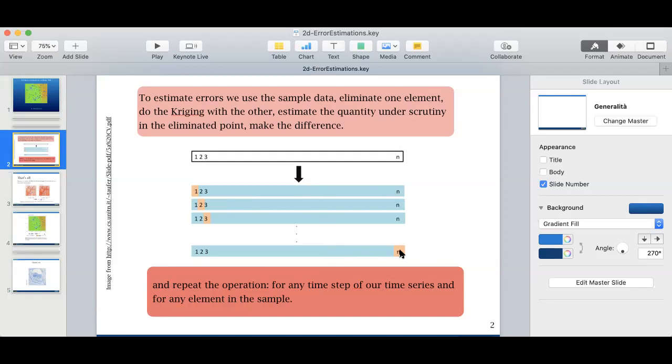For any of the n experiments that we do, we use the point that we exclude as a control point, and we can go and calculate the error between the estimated value on that point and the value that was actually measured at that point. So we can do the difference. If the difference is over different sets of data, for instance in different time steps, we can do statistics and calculate the mean average error. It is called the leave-one-out method.